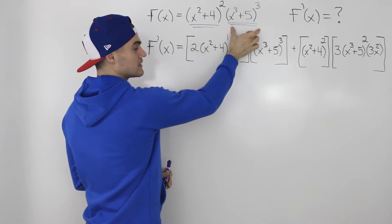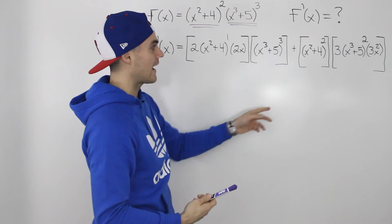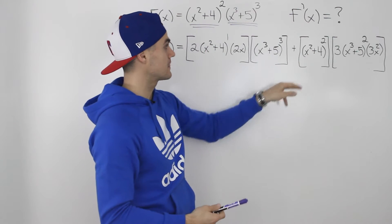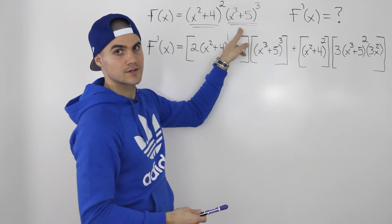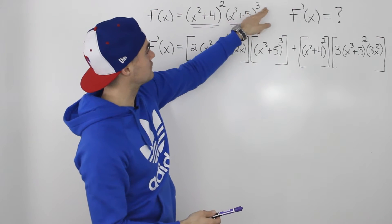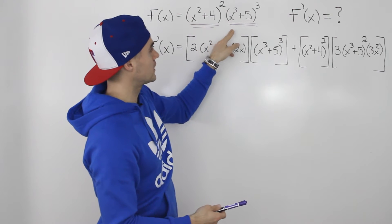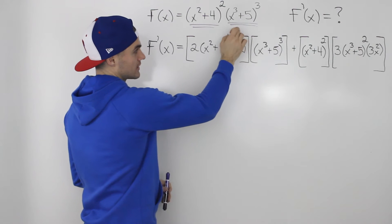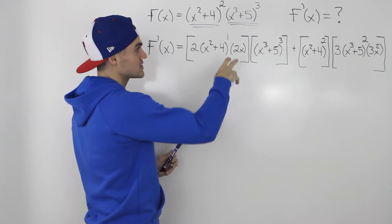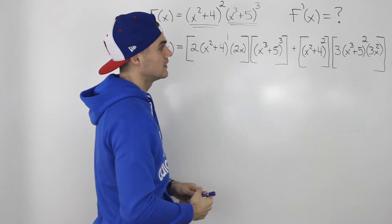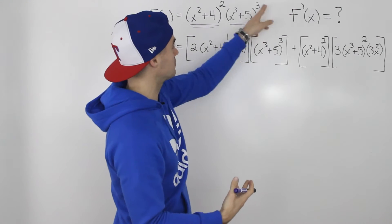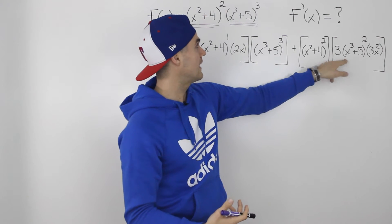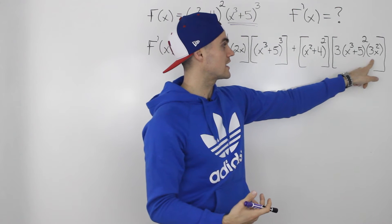Then we multiply it by the second function, and then we add the first function as is — x squared plus 4 to the power of 2 stays the same — times the derivative of that second function. When we take the derivative of x cubed plus 5 to the power of 3, we apply the chain rule again, or the power of a function rule, because it's a function x cubed plus 5 within another function. Taking the derivative of the outer function first, we bring the 3 down, subtract 1 from the exponent, keep the inner function the same, and then take the derivative of the inner function, which is 3x squared.